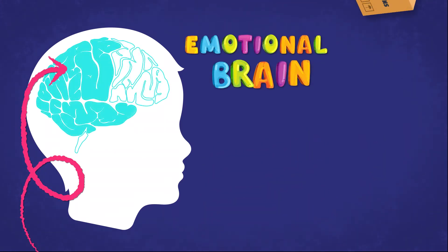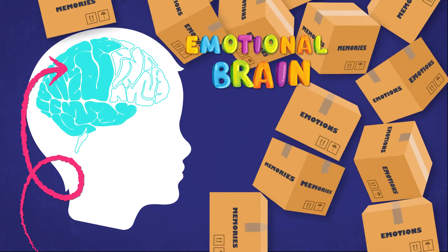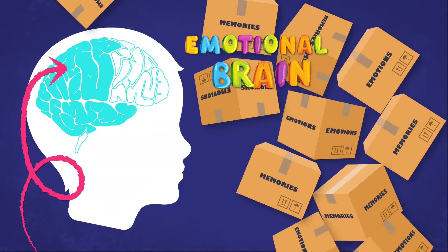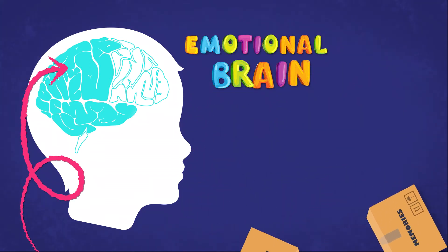The second part of our brain is our emotional brain. The emotional brain is in charge of the storing and sorting of emotions and memories.